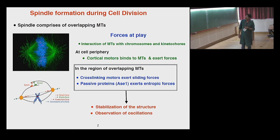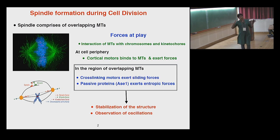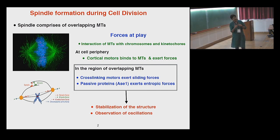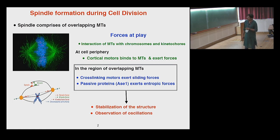Some of the interactions that take place include: microtubules interacting with chromosome arms; organelles called kinetochores, which also interact with these microtubules; and at the cell periphery, microtubules interact with the cell boundary via cortical motor proteins, which bind to these microtubules and exert forces. I'm going to focus on the region of overlapping microtubules. These overlapping microtubules are cross-linked by motor proteins — generally kinesin and dynein. In this overlap region, you also have passive proteins like ASE1, which typically exert entropic forces, and the stability is determined by all these forces.